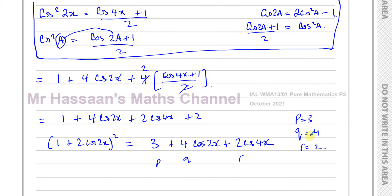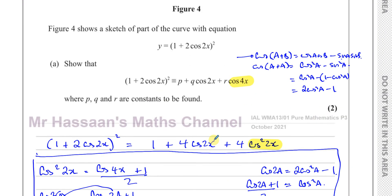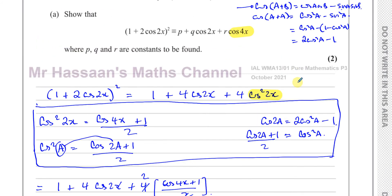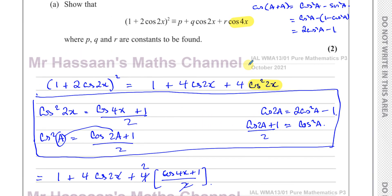That's the end of question 10 part a — two marks for that. It's a bit of work for two marks, but anyway. The key is recognising that we need to use the double angle formula because 4x is double 2x.